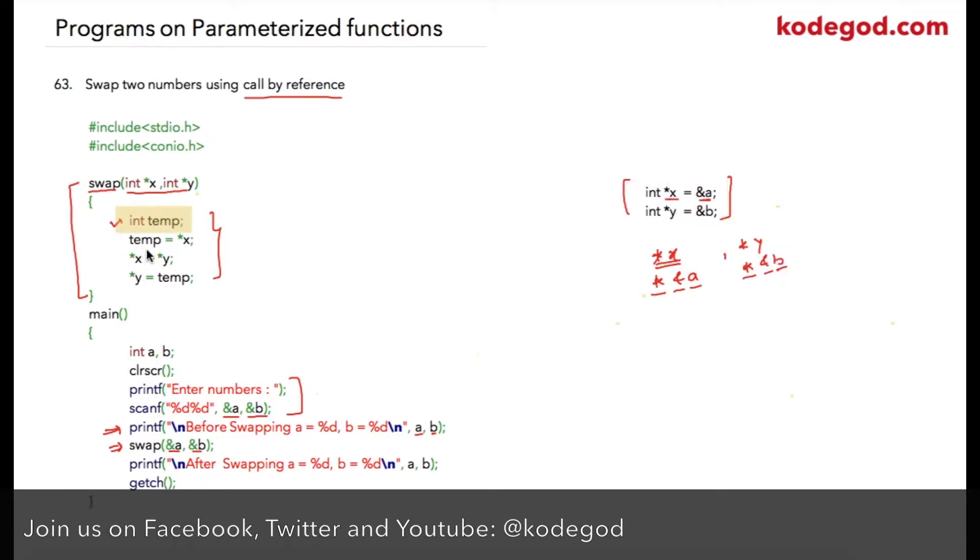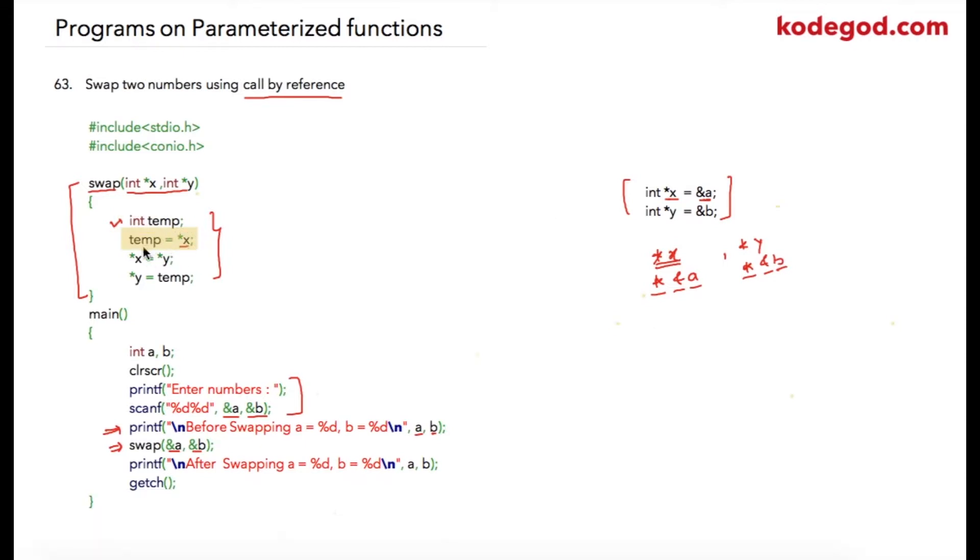So star x, which is equivalent to a, will be stored into temp. And then star x is equal to star y, that is equivalent to a is equal to b.